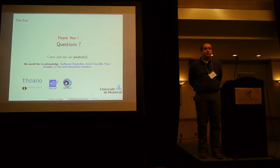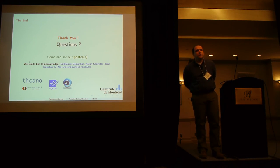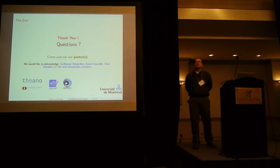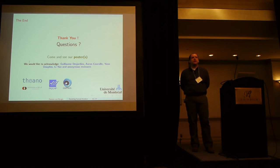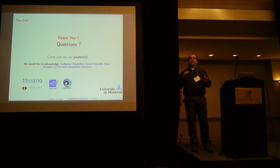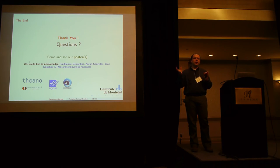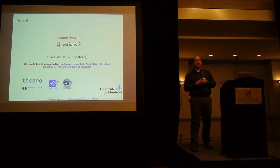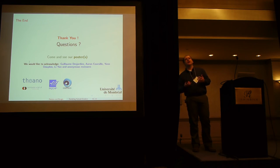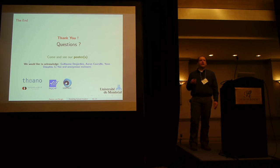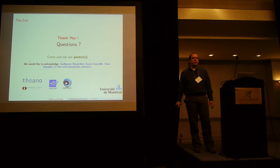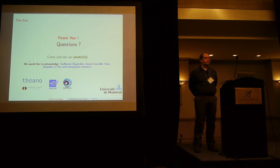Q: Does natural gradient help with vanishing gradients? A: It's not clear yet why HF helped with vanishing gradients — there is no strong theoretical reason why it should. The intuition is that in a very high-dimensional space the different gradient components might be orthogonal, so the Fisher information matrix can treat them independently and normalize them. This is an intuition for how second-order methods could help with vanishing gradients, but it doesn't really address the underlying problem — that's a separate issue requiring separate solutions.